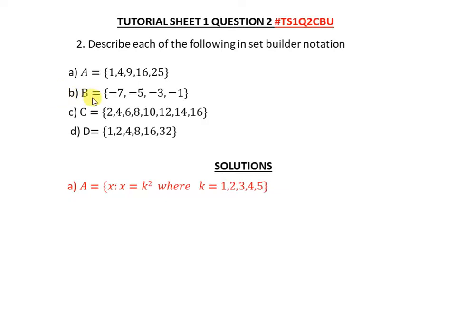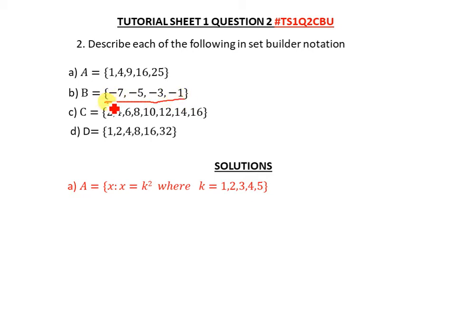Moving on to part B: B = {-7, -5, -3, -1}. As I said, there are many ways to write this. For part A, instead of writing {1, 2, 3, 4, 5} you could say k is a member of natural numbers less than 6 — you'd still be marked correct. The same applies here.